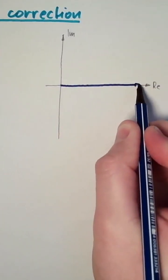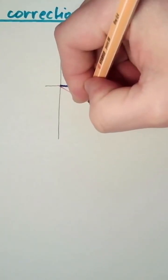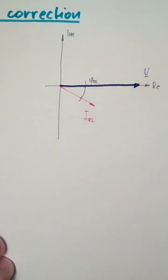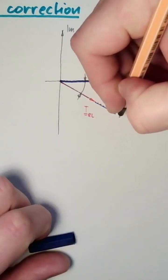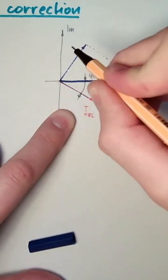So we have a voltage. In the pointer diagram, our voltage U, our IRL, has a certain phase. In phase with I is UR. UR and UL must be U.